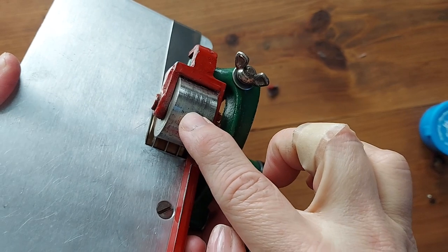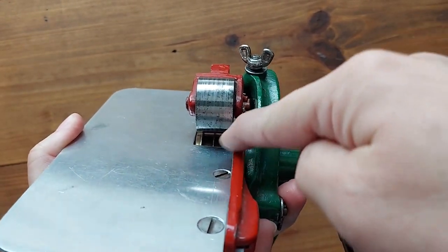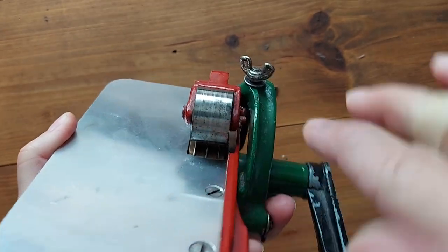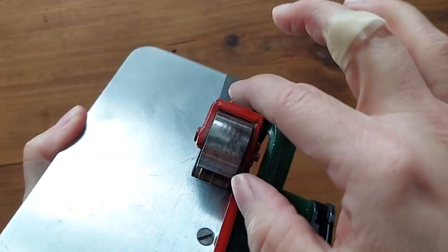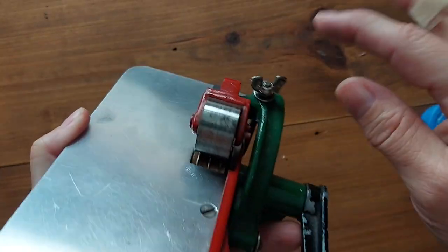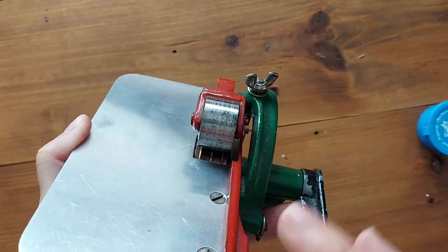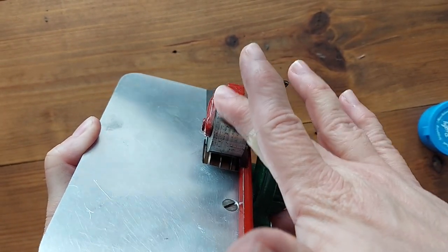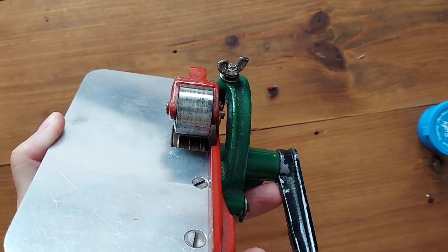So this top piece here rolls against the blades and that's what holds the fabric in place and cuts it. But when you're not cutting you want this piece loose so it doesn't push the blades down and bend them. So you want to tighten it back up a little bit when you are using it so that the roller will fit right up against the blades and cut the fabric.